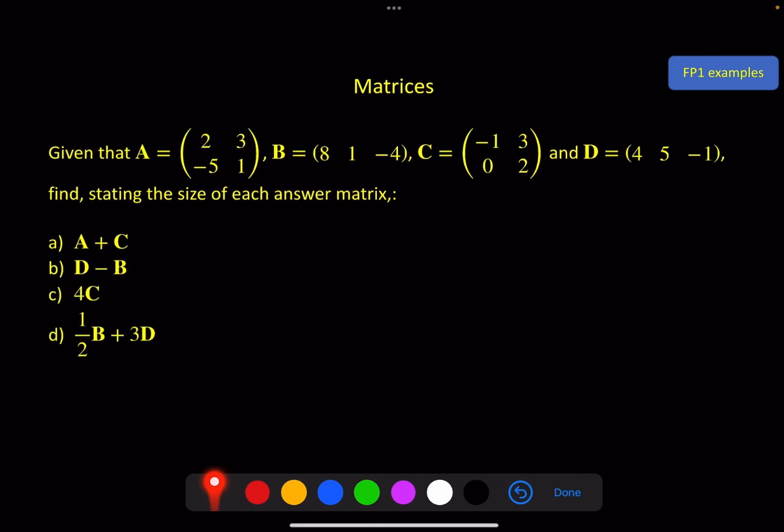So a few examples. Given that A is this, B is this, C is this, and D is this, find, stating the size of each answer matrix, A plus C. So we've got 2, 3, minus 5, 1, plus minus 1, 3, 0, 2.